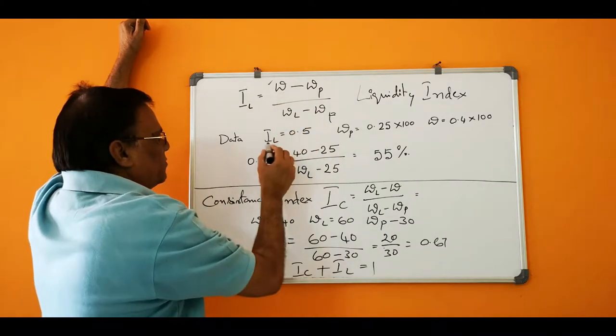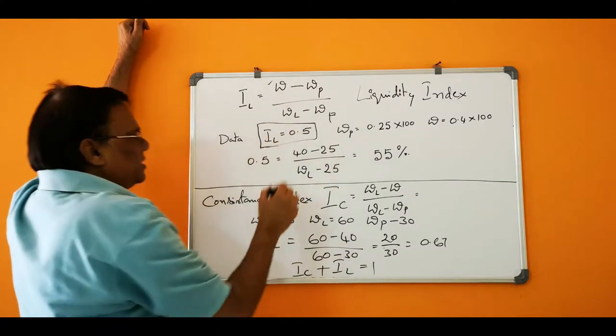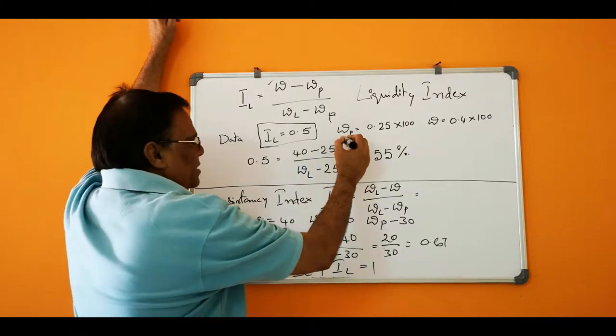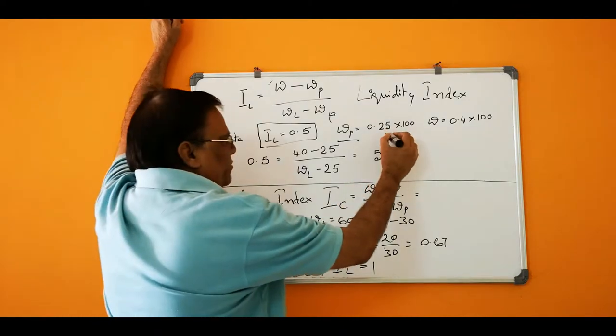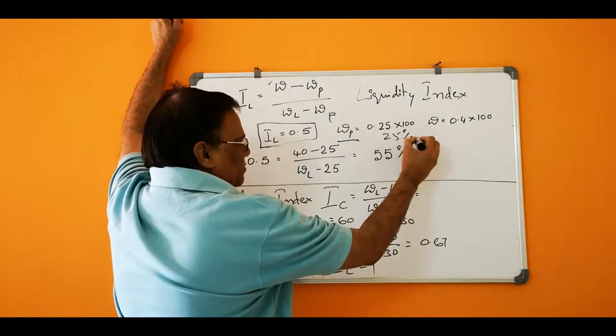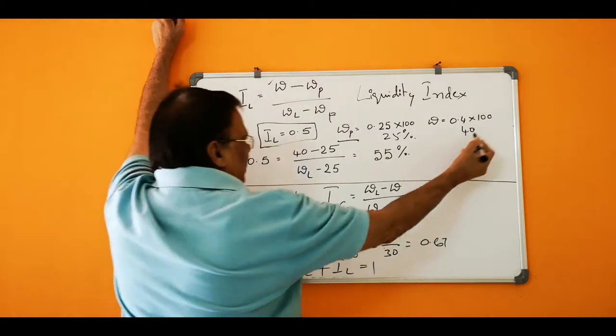If IL is 0.5, IL is given and if it is 0.5, where plastic limit is 25% and natural water content is 40%.